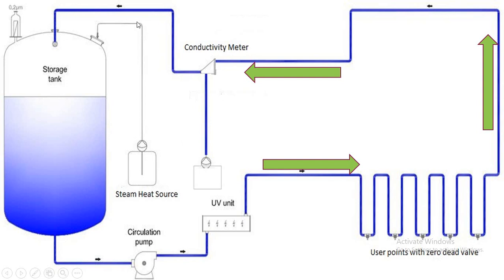There is a steam source line and a steam-jacketed tank. The circulation loop is maintained at 72 to 80 degrees Celsius. We can maintain this temperature to avoid microbial growth. There is also a breathing filter installed on the tank.